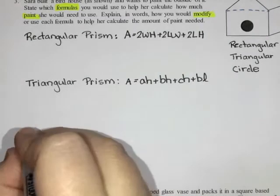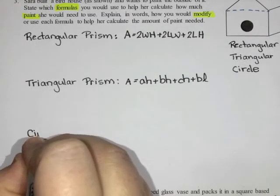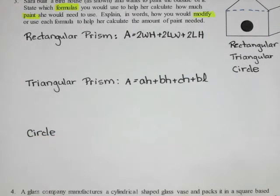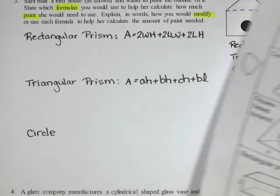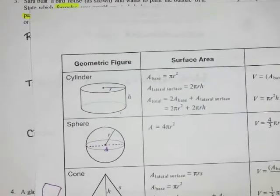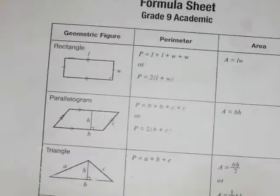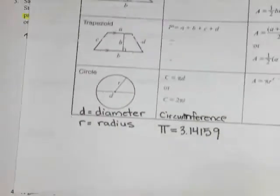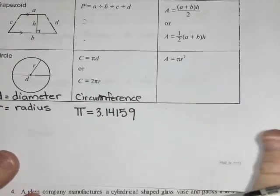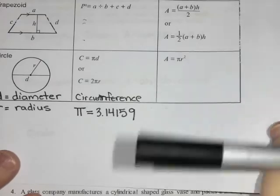The last formula is for the circle. You won't find the circle on this side of the formula sheet — you need to go to the other side. The area of a circle is πr².